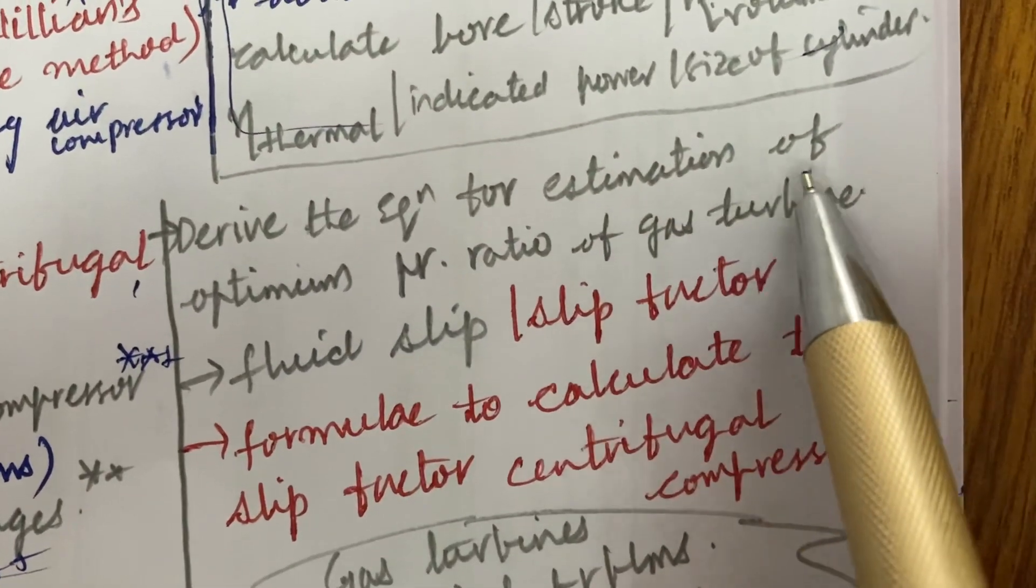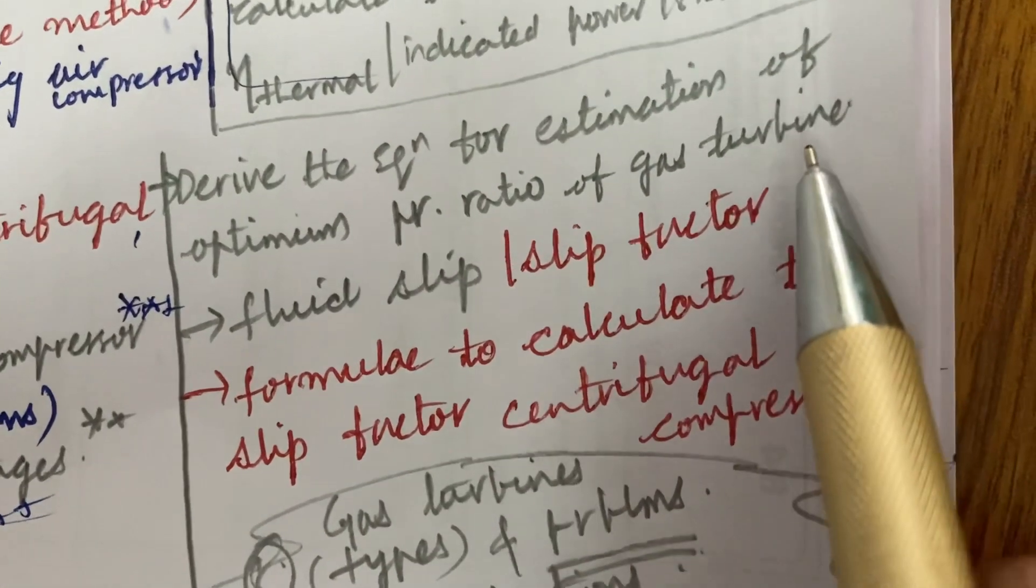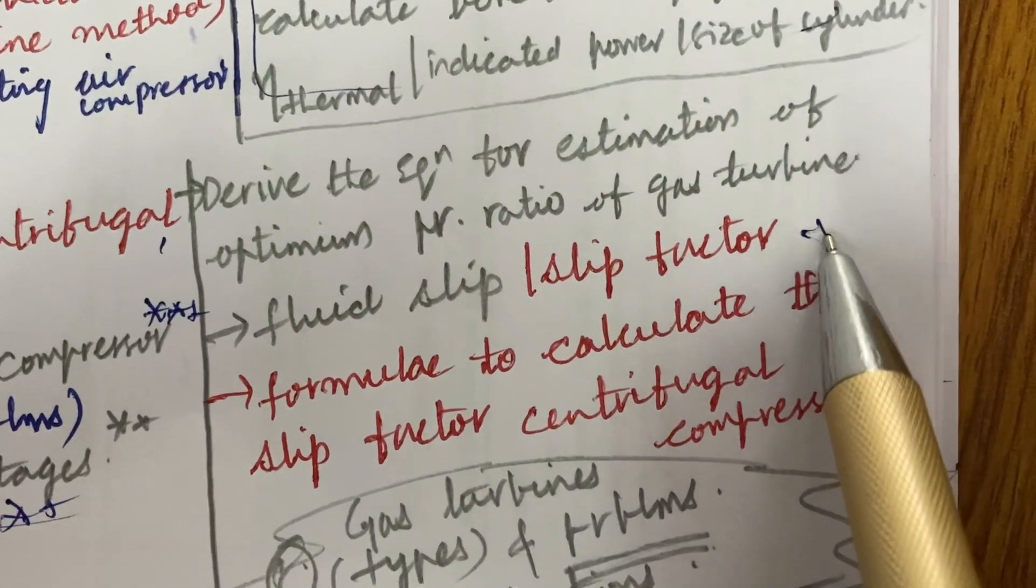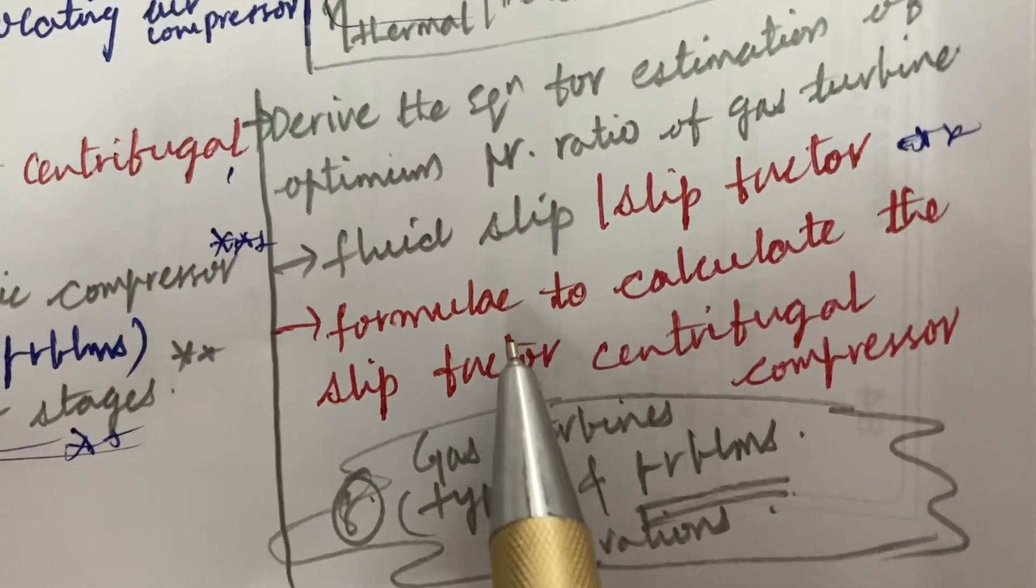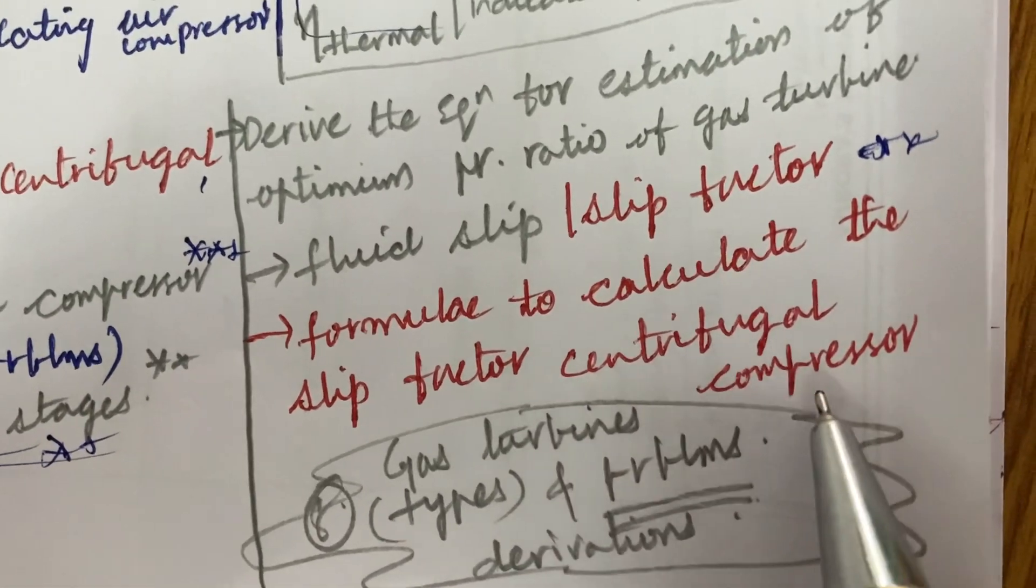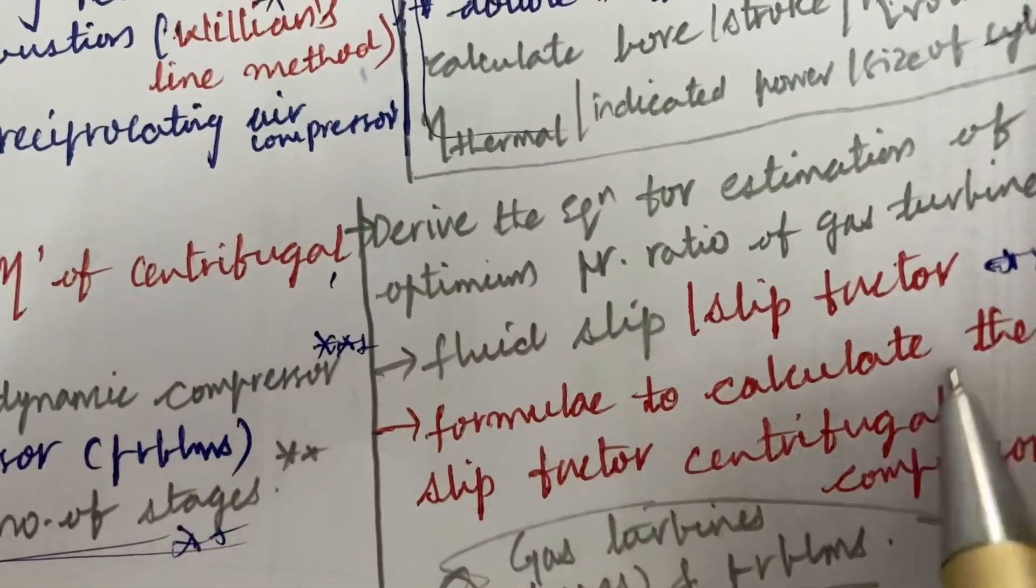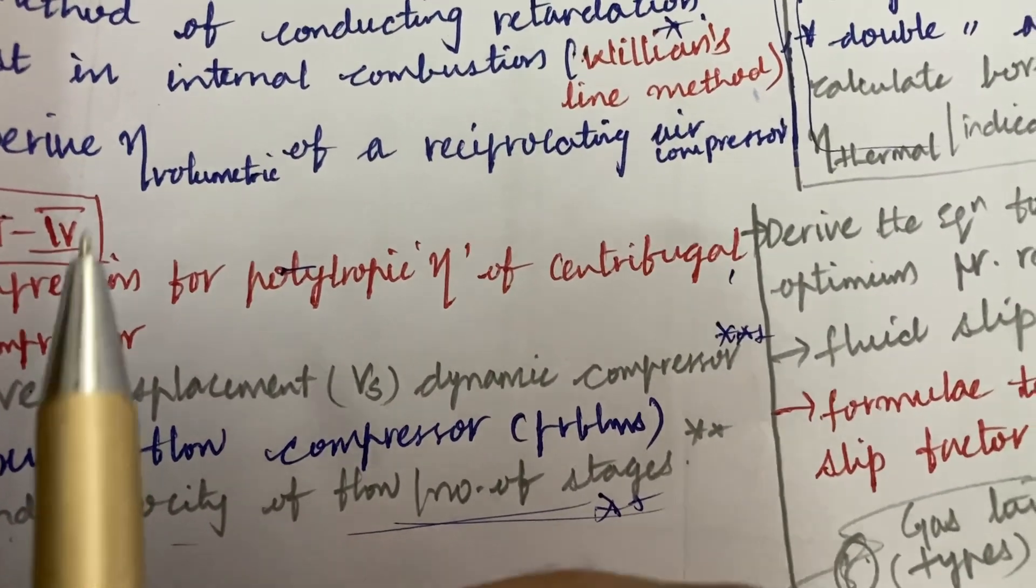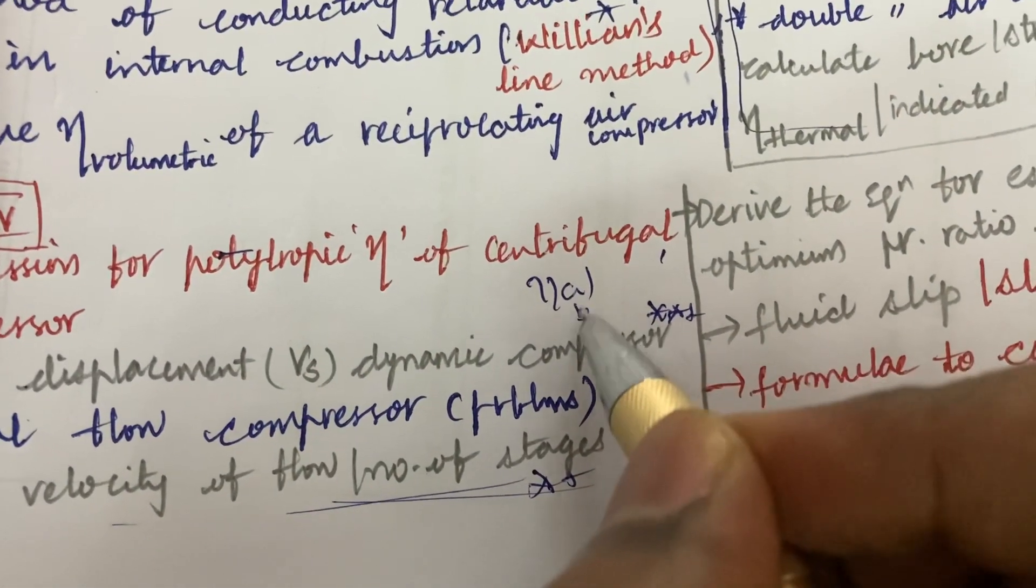Derive the equation of the estimation of optimum pressure ratio of a gas turbine and what is fluid slip and the slip factor. They may be asking you to explain and a formula to calculate the slip factor in a centrifugal compressor. From this part which I have talked here till now in the fourth unit, you will be getting one question, I mean 7A as well as 7B, dear students. These are the important questions till the seventh question.